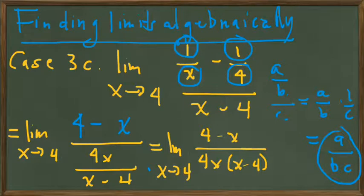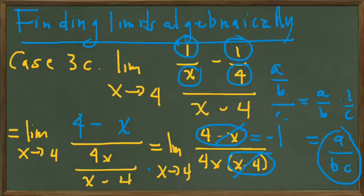So rewriting our fraction into the a over bc structure, notice that we have just what we want, or almost just what we want. We can remove the x minus 4 by pairing it with the 4 minus x, canceling those two to get a minus 1 in the numerator. And then we're going to pick up what we have as a case 1 limit on the next slide.